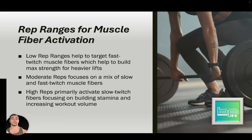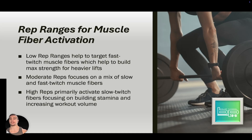When it comes to muscle fiber activation: low rep ranges target fast twitch muscle fibers, which build maximal strength for heavier lifts. Moderate reps activate a mix of slow and fast twitch fibers, which is why that range produces the most hypertrophy. High reps primarily activate slow twitch fibers, which build stamina and increase workout volume.